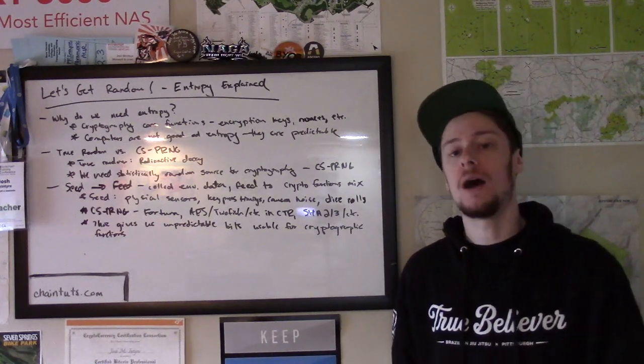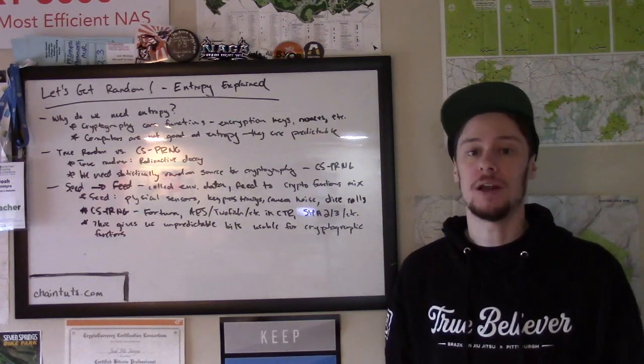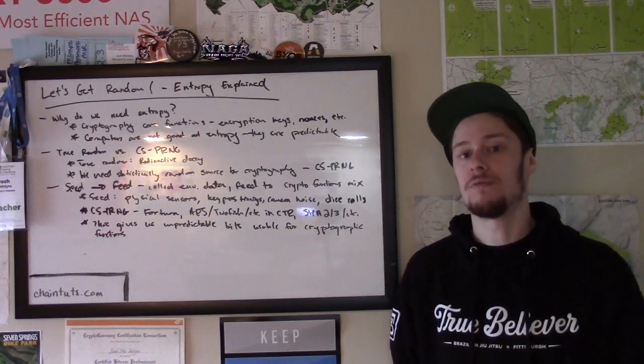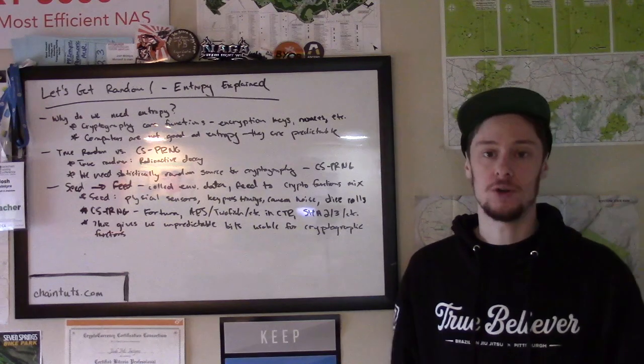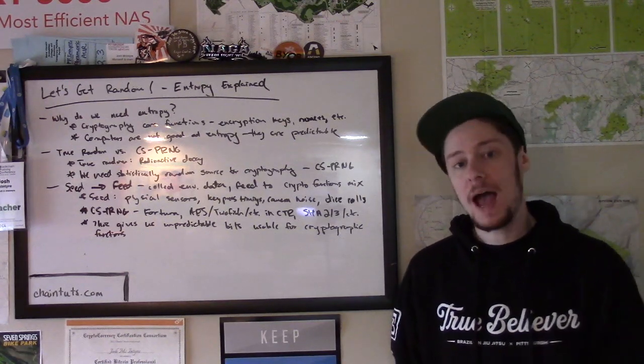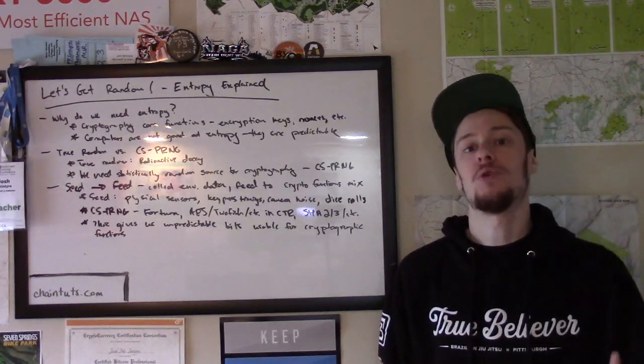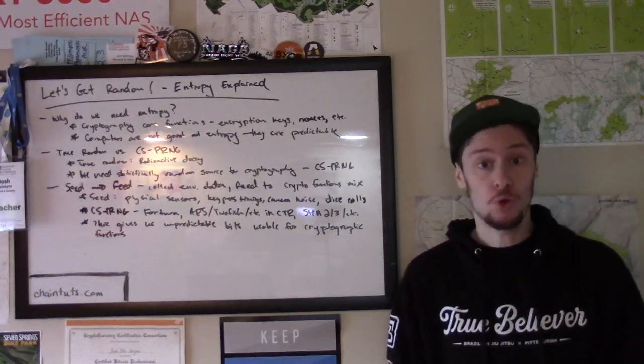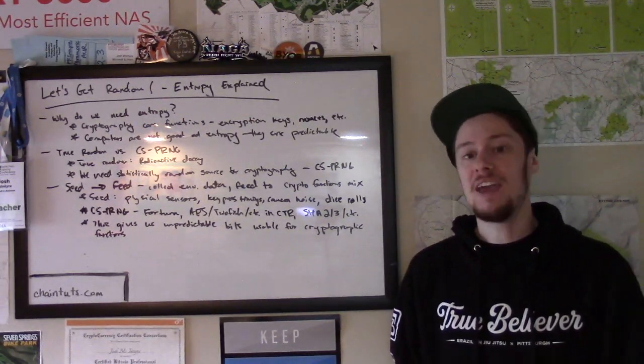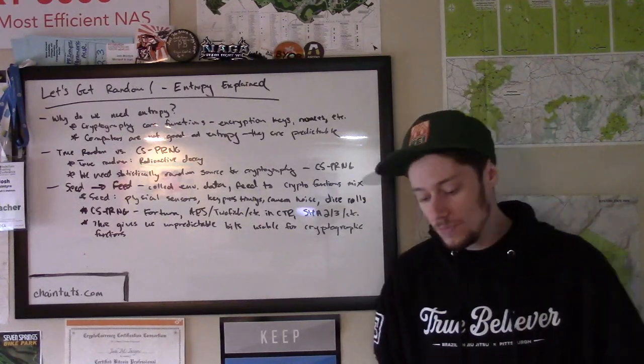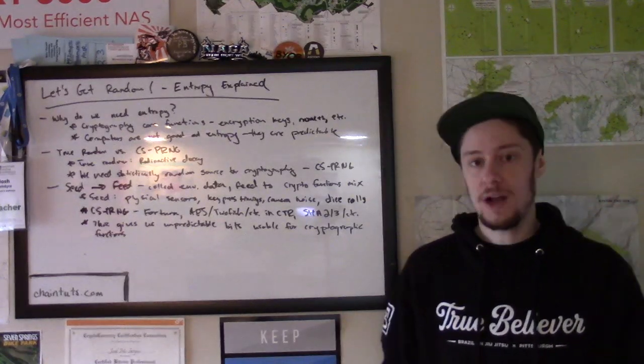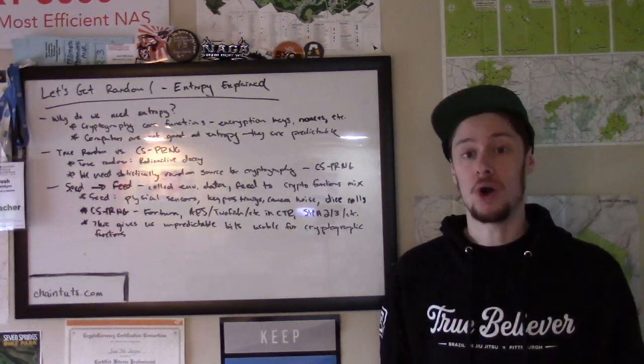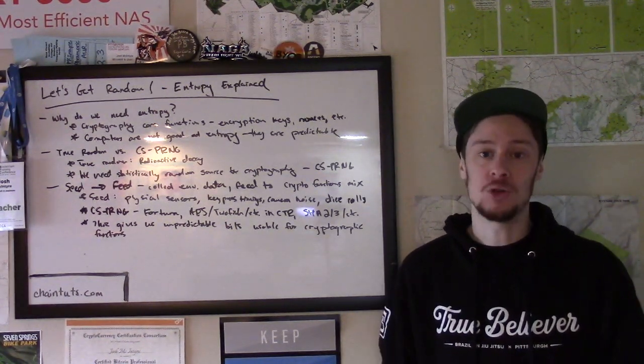So we're not relying on our adversary not knowing how our encryption system works. We're only relying on them not being able to guess our secret encryption key. So we must have good sources of random numbers for these encryption operations. If our adversary in any way can start to predict the keys that we're using for our encryption or for our Bitcoin private keys, they can start to break that crypto system. And so in order for us to avoid leaking our private information or losing our money, we have to make sure we have those good keys.